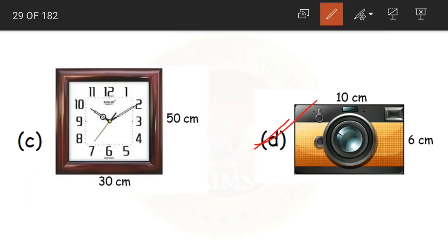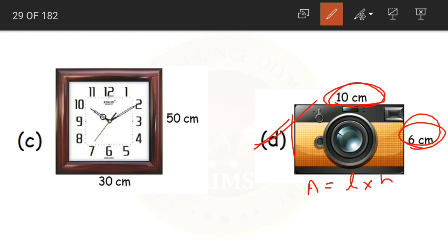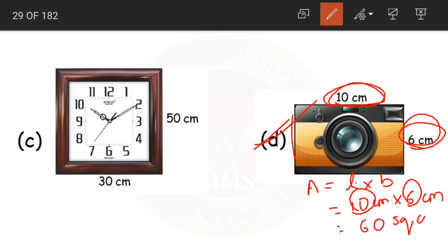Coming to question D. This is also a rectangle with sides 10 centimeters and 6 centimeters. Area of rectangle equals length into breadth equals 10 centimeters into 6 centimeters equals 60 square centimeters.